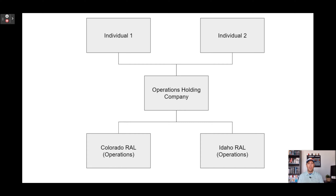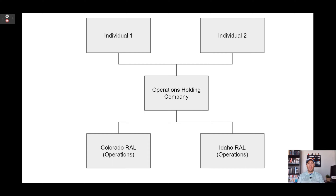That's kind of how we have things set up for our operational entities. If you have questions about the way you've structured your entities — maybe you're a sole proprietor, or an individual operating in only one state — then you probably just need this one entity, because we're operating in multiple states, that's why we have such a complex structure. This is not required at all for you to get started. Having something as simple as an entity that owns and operates the business in your one specific state is going to be sufficient. This is where having a conversation with a professional is going to help you figure out how to get things structured for your specific situation.